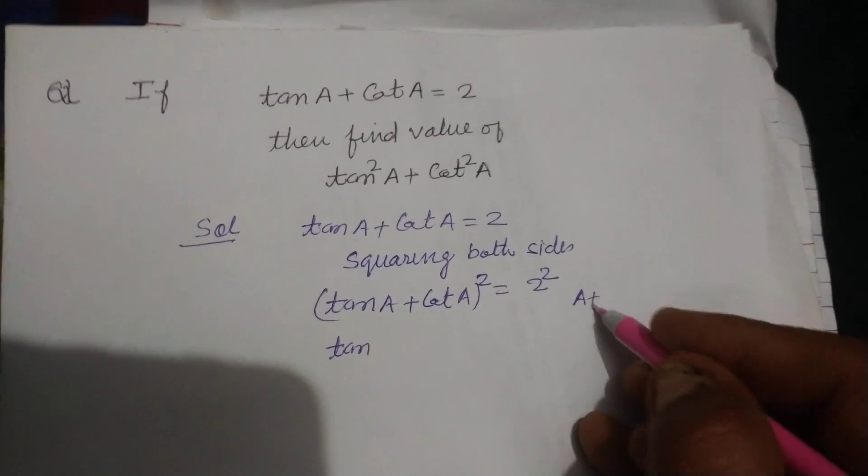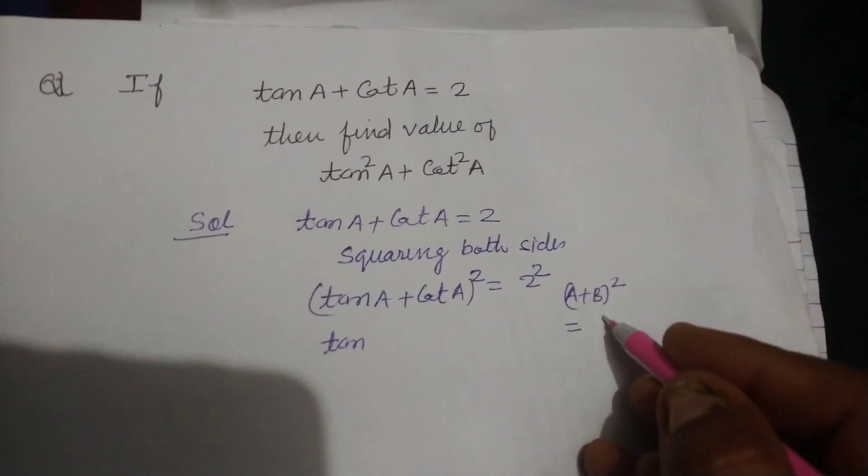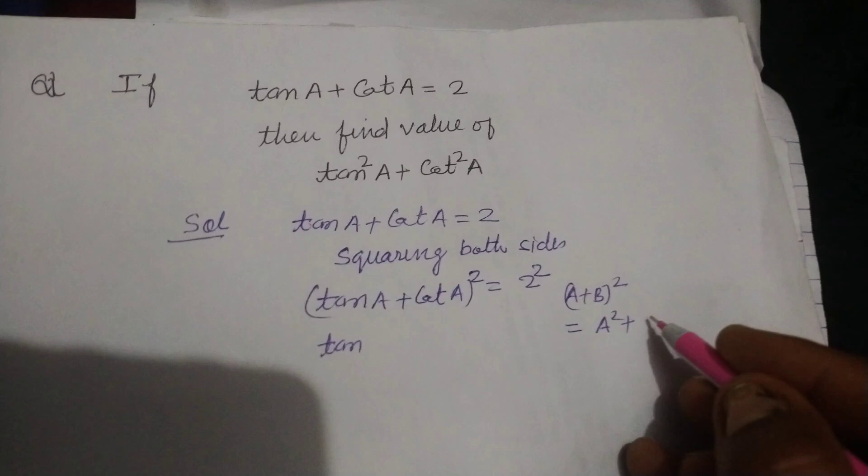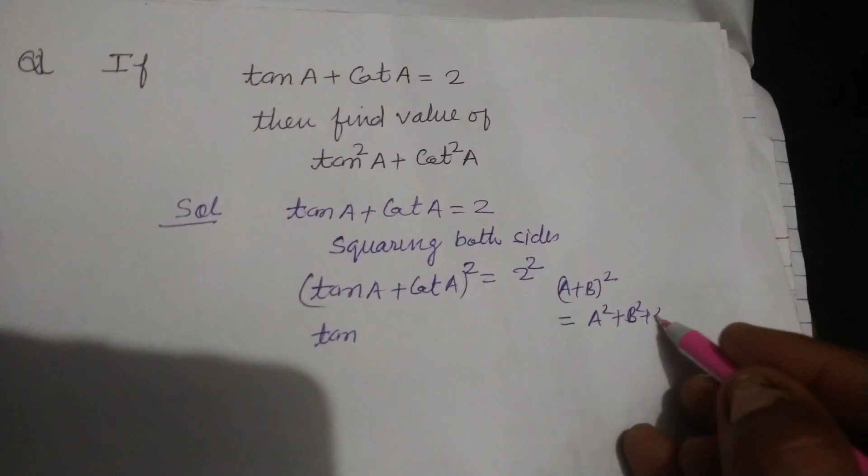So tan A plus cot A whole squared equals 2 to the power 2. Now using the identity: A plus B whole squared.